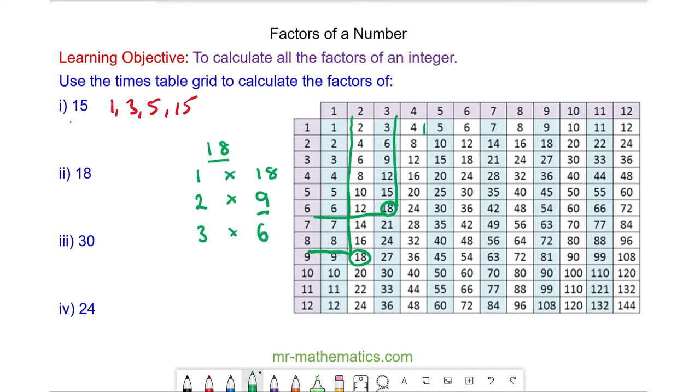18 does not appear as a multiple of 4 or a multiple of 5 and we know it is the third multiple of 6. So these are all the factors of 18. Do you want to try and work out the factors of 30 and 24 by pausing the video and you can resume it when you're ready.